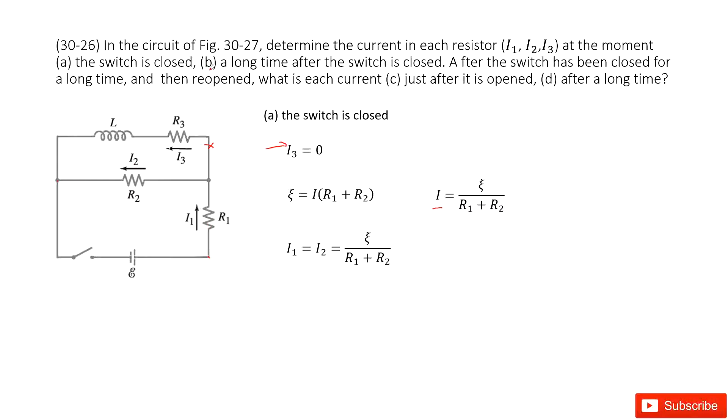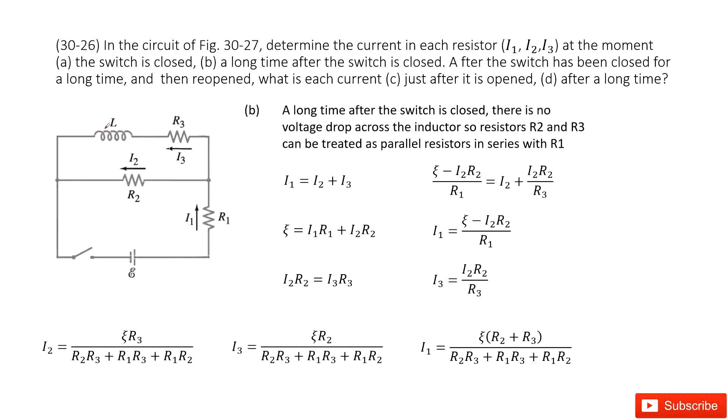So the second one asks you a long time after the switch is closed. So we can see if the switch is closed for a long time, then this inductor will decay and the inductance becomes zero. So a long time after the switch is closed, there is no voltage drop across the inductor. We can just ignore this inductor, think it as a straight wire. So now this becomes the R2 and R3 do the series connection, do parallel connection and then do series connection with R1. So we can see from this point, the current I1 equals I2 plus I3.